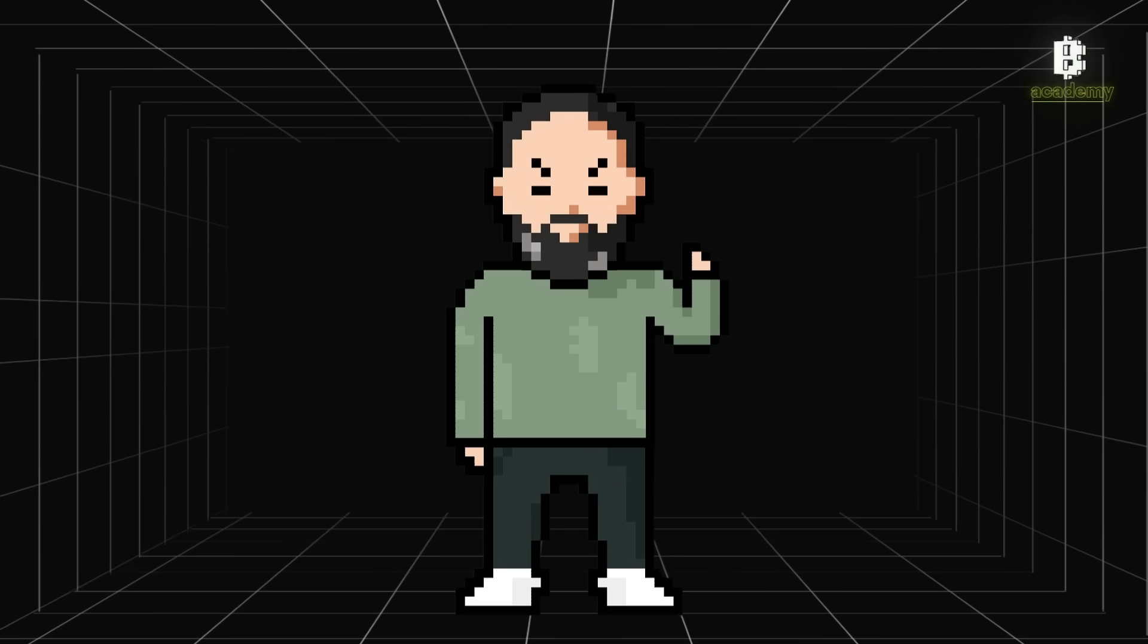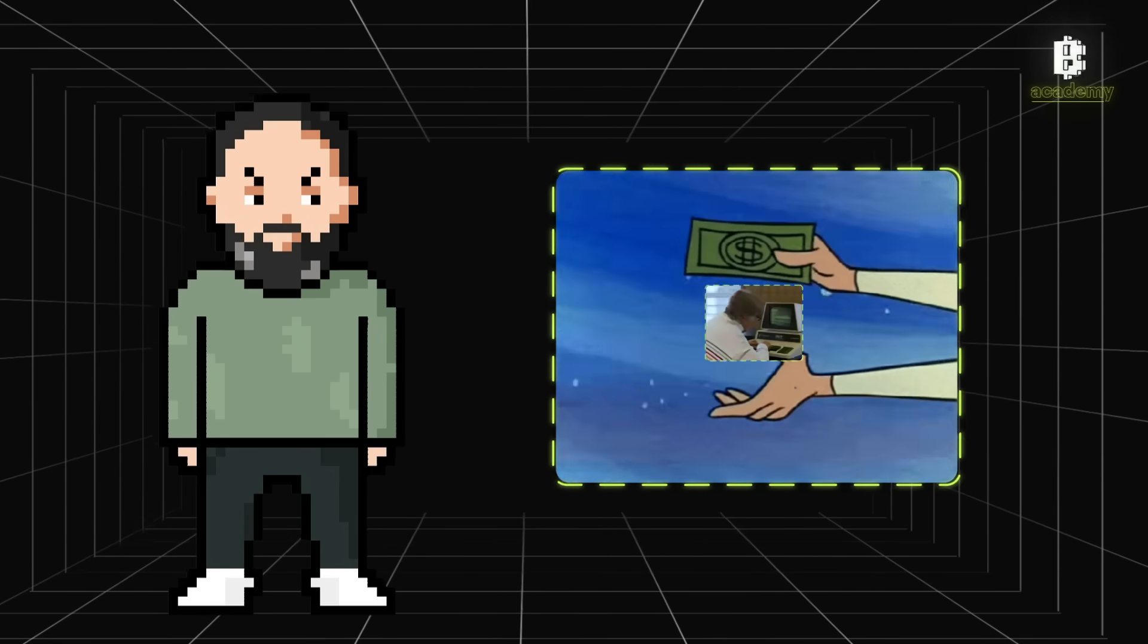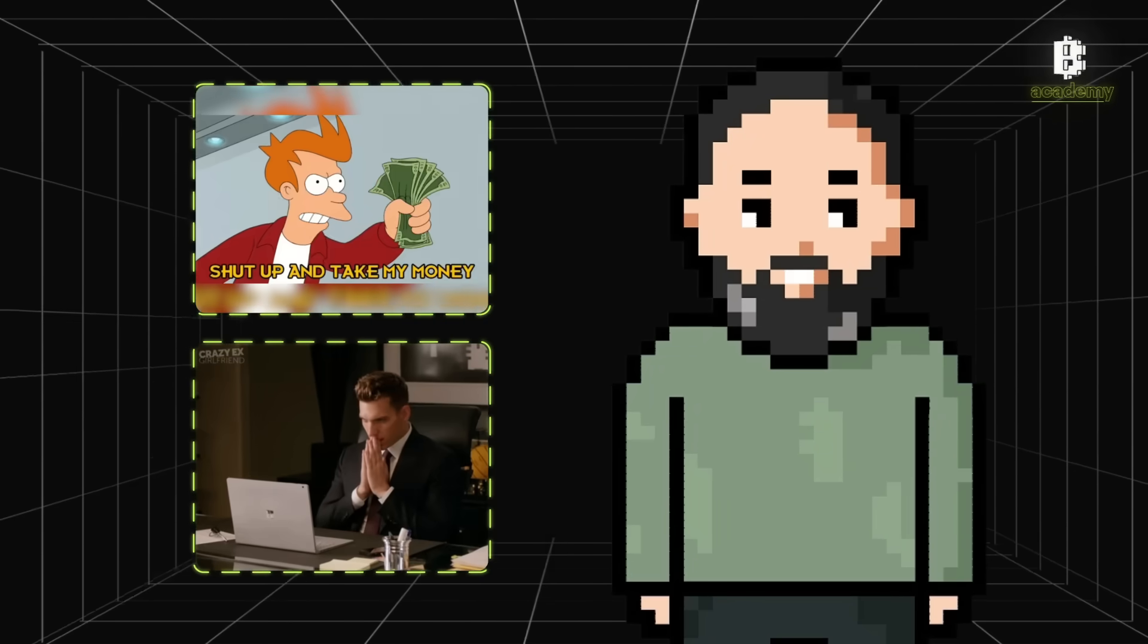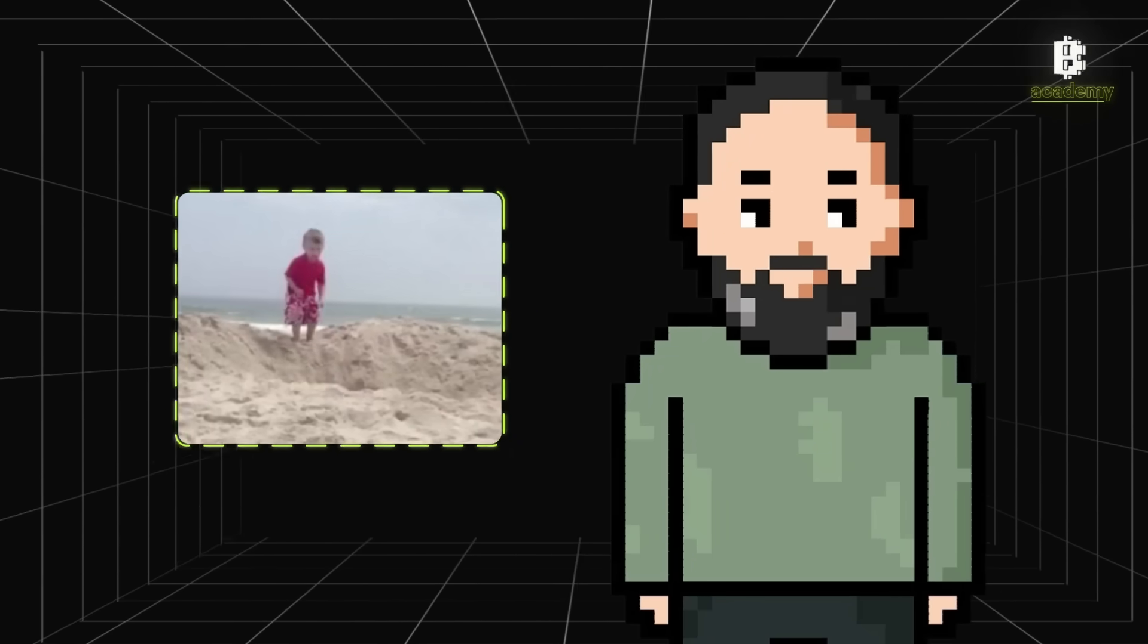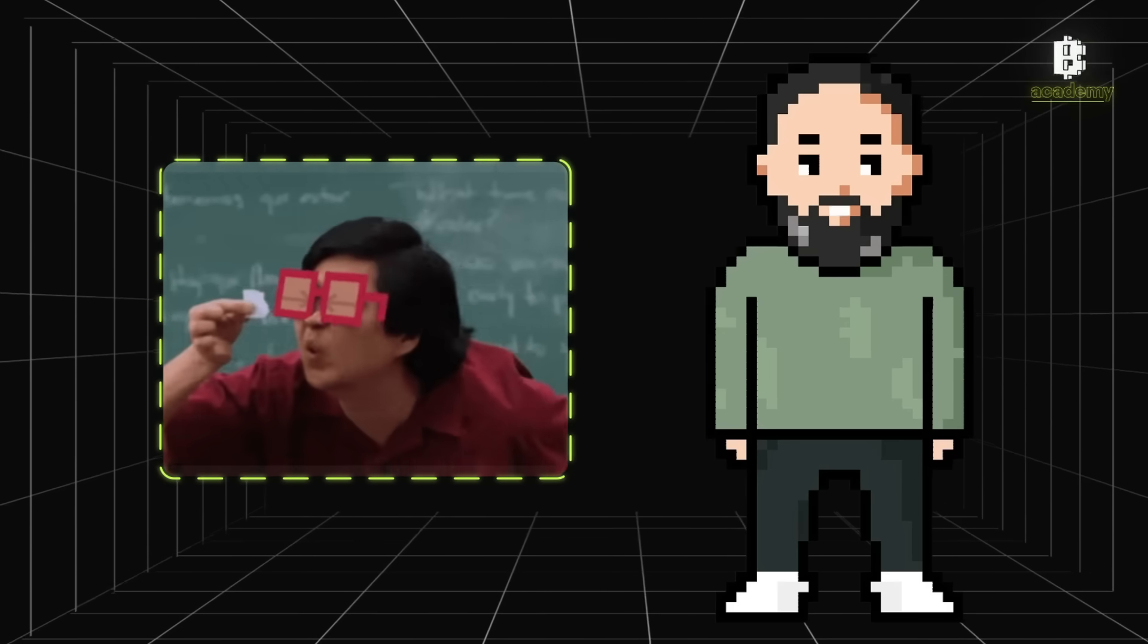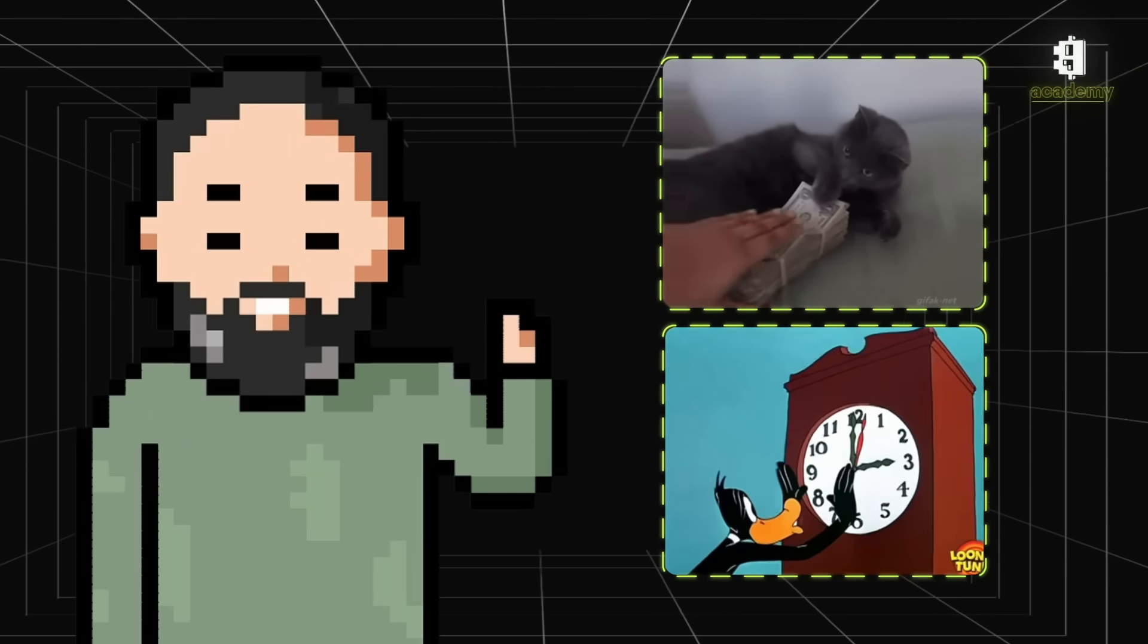Gas fees are the cost you pay every time you do something on a blockchain network, whether you're sending crypto, buying an NFT, or diving into a decentralized app. Everything on Ethereum needs gas to run. They might seem tiny, but trust me they can stack up real quick, so understanding them means saving money and time.